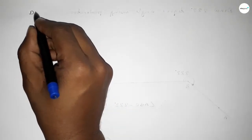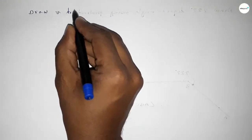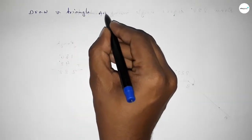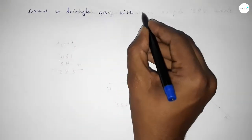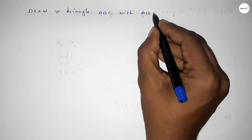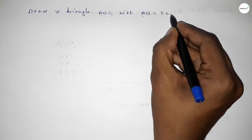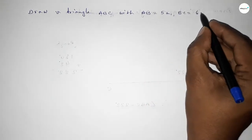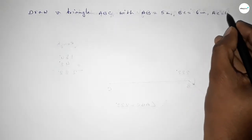Hi everyone, welcome to SI Share Classes. Today in this video we have to draw a triangle with AB equal to 5 centimeter, BC equal to 6 centimeter, and AC equal to 4 centimeter. So let's start the video.